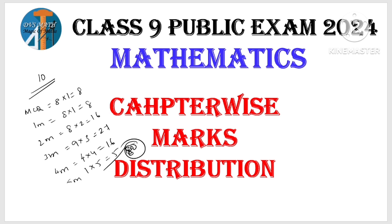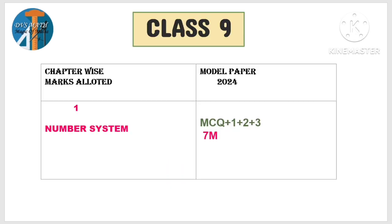So I will start this video with the model paper and continue in the next video. Share the video because everyone can compare the chapters. Part 1 and Part 2 — total 15 lessons. Part 1 is 7 lessons. Number system is the first lesson and that lesson is 7 marks. So this is the model paper.